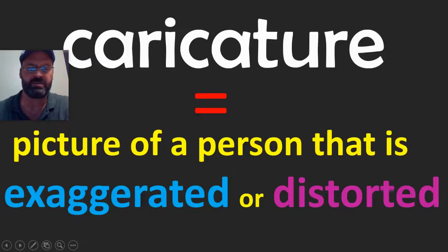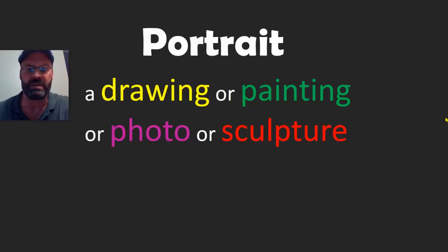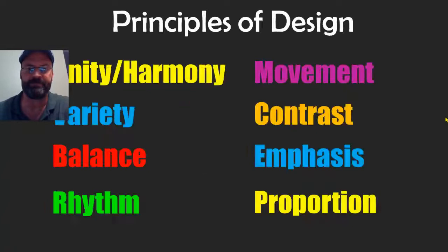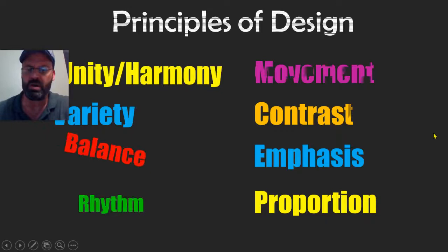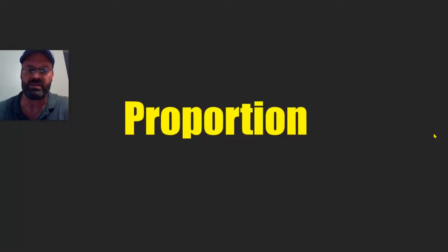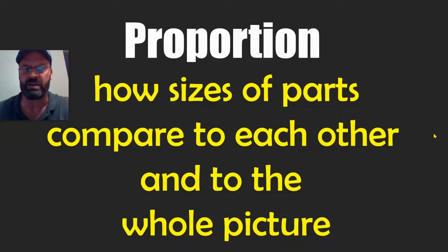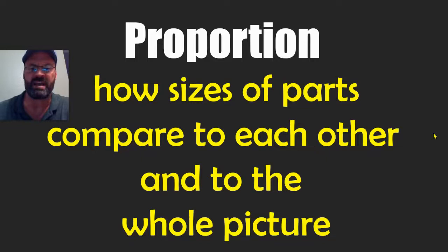To review: we learned about caricatures — pictures of people or pets that are exaggerated or distorted. A portrait can also be a realistic drawing, painting, photo, or sculpture of a person or pet. When making a realistic portrait, think about proportion — are the sizes right compared to the whole? If you make a caricature, sizes are out of proportion, but stay consistent — if both ears are big, make them both equally big.